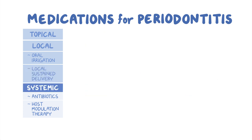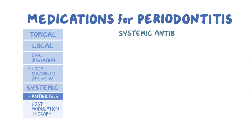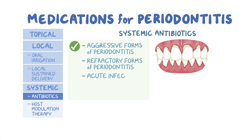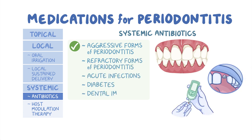Finally, we have systemic delivery of medications, which include systemic administration of antibiotics and host modulation therapy. Systemic antibiotics can be used in individuals with aggressive forms of periodontitis, refractory forms of periodontitis, acute infections, diabetes, and dental implants. However, it's important to note that systemic antibiotics are not indicated for most periodontitis cases since overuse could increase bacterial resistance.